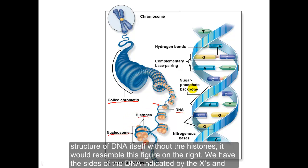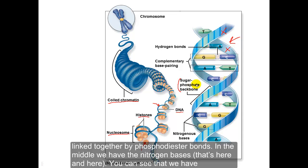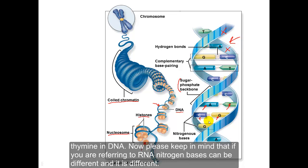If you look at just the structure of DNA itself without the histones, it would resemble this figure on the right. We have the sides of the DNA — indicated by the X's — which are the sugar-phosphate backbone: the sugar molecule and the phosphate molecule, linked together by phosphodiester bonds. In the middle we have the nitrogen bases, and you can see complementary base pairing: cytosine always pairs with guanine, and adenine always pairs with thymine in DNA. If you are referring to RNA, it can be different.